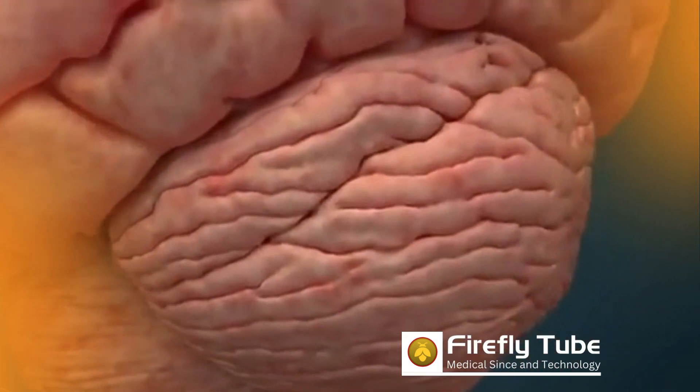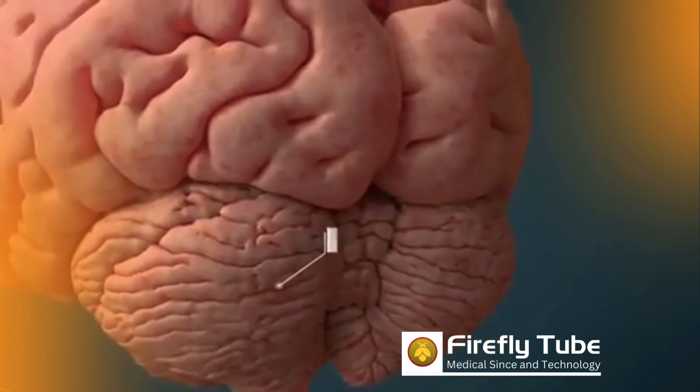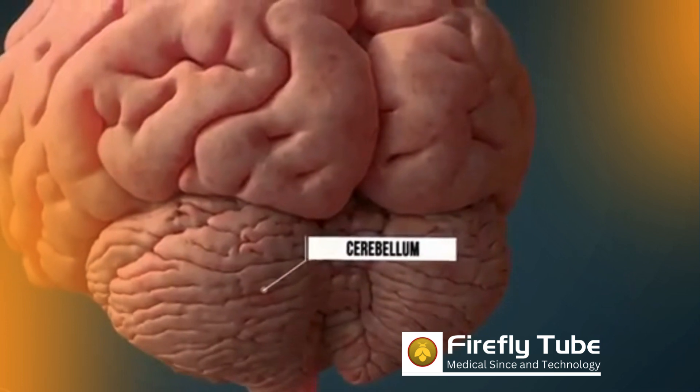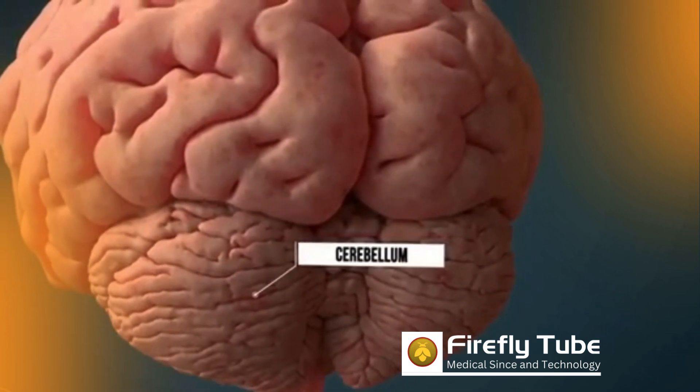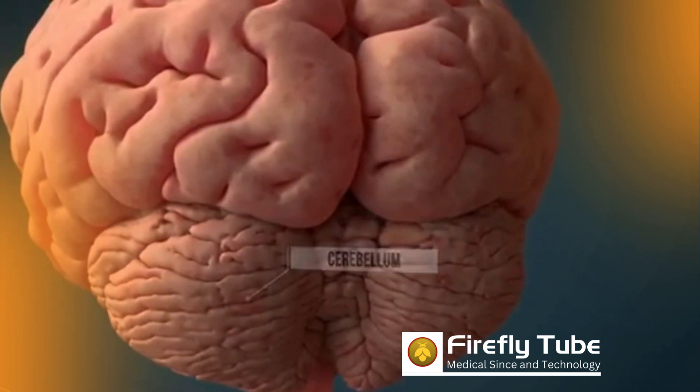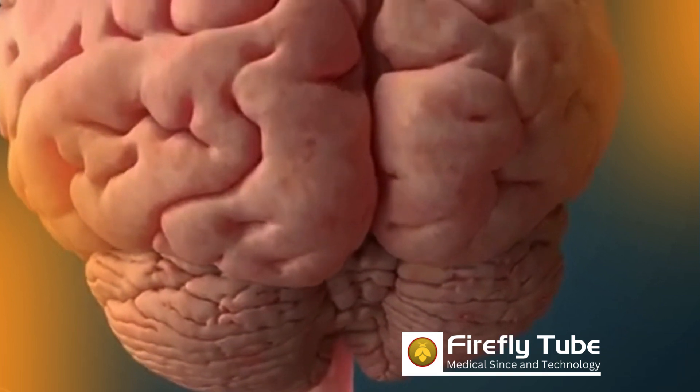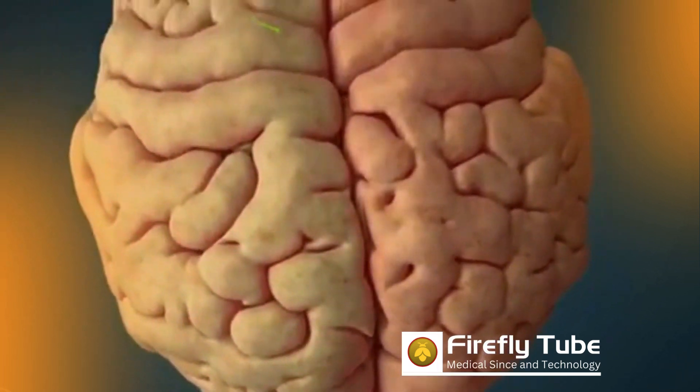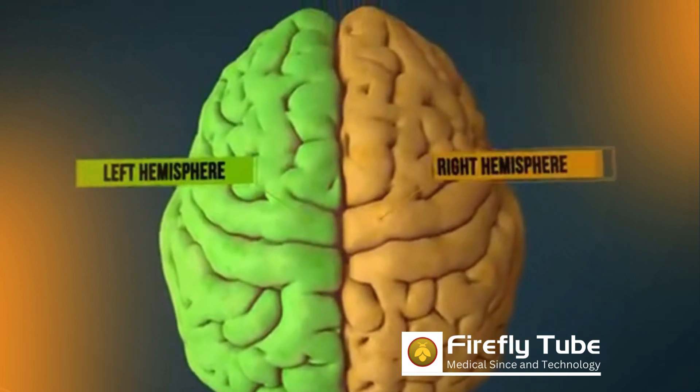The cerebellum is smaller than the cerebrum but has almost as many nerve cells as the cerebrum. Like the cerebellum, the cerebrum has a left and a right hemisphere.